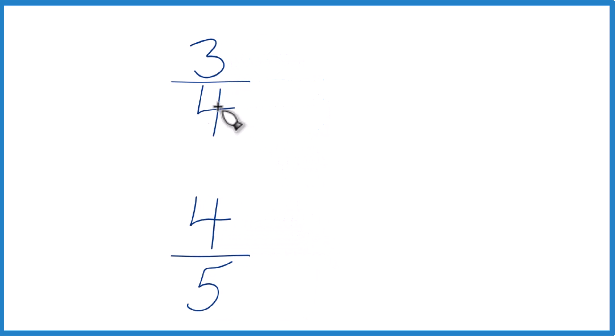Let's take and multiply 4 times 5, and that'll give us 20. And then down on the bottom here, let's multiply 5 times 4, and that will give us 20. So now you can see we have the same denominator here.